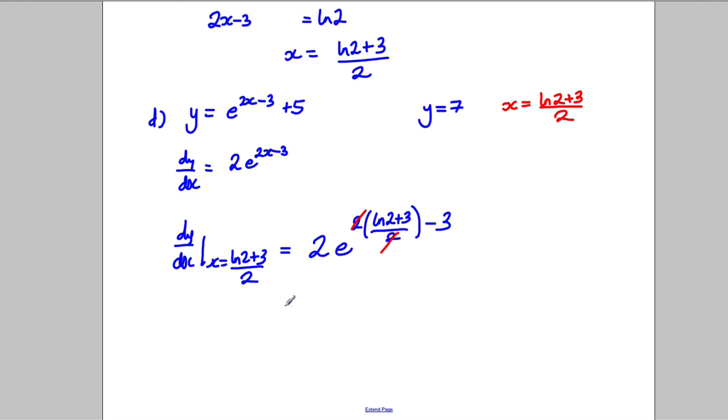There's a 2 on the numerator and the denominator. So you get 2e to the power of ln 2, add 3, and then take away 3, like that. Don't forget the take away 3s here. So that's just 2e to the ln 2, and e to the ln 2 is 2. So that's 2 multiplied by 2, which is equal to 4.